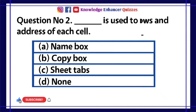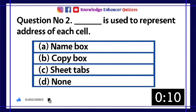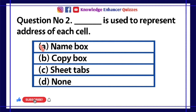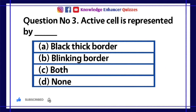Question number 2: Dash is used to represent the address of each cell. A. Name box  B. Copy box  C. Cheat tabs  D. None. Option A is the right answer.